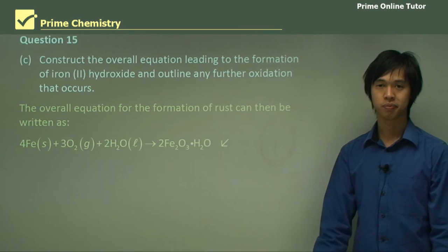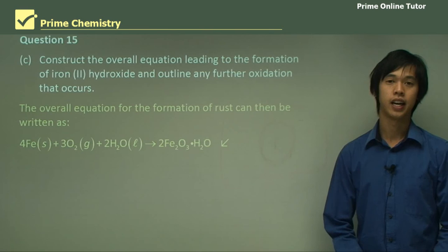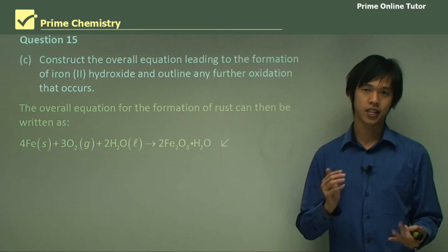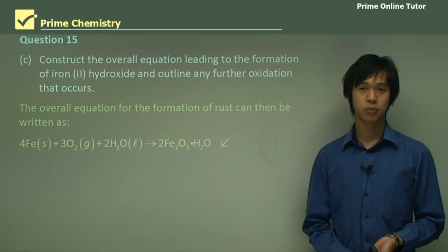That concludes today's lesson on rusting and the mechanism of rusting, and it concludes our series on alloys. In this lesson we looked at rust and how it forms, and in this series we looked at alloys, steel, and how steel rusts. Hopefully you've learned something about steel and rusting, and I look forward to seeing you in our next lesson.